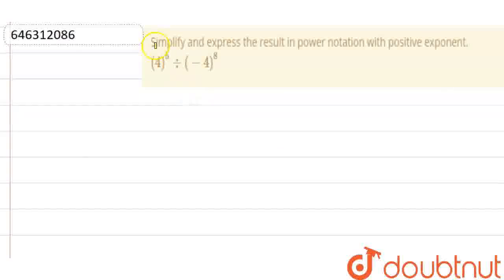Hello everyone. So our question is simplify and express the result in power notation with positive exponent. 4 to the power of 5 divided by minus 4 to the power of 8.